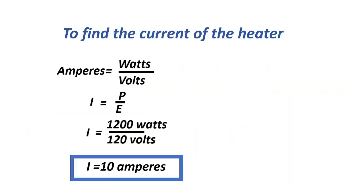To find the current of the heater: amperes equals watts over voltage, or I equals P over E, equals 1,200 watts over 120 volts. Our current is 10 amperes.